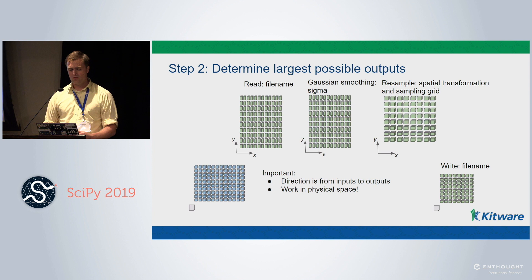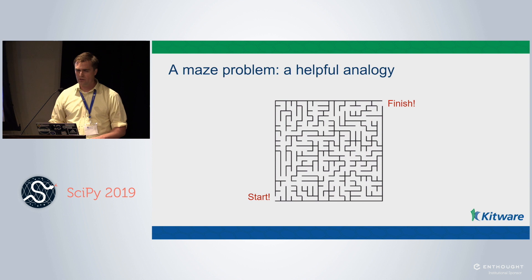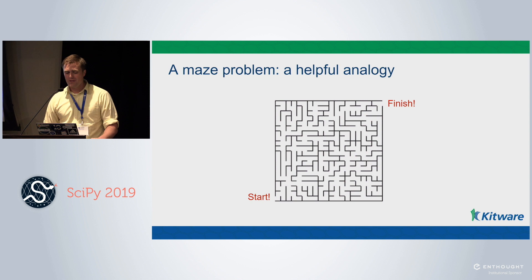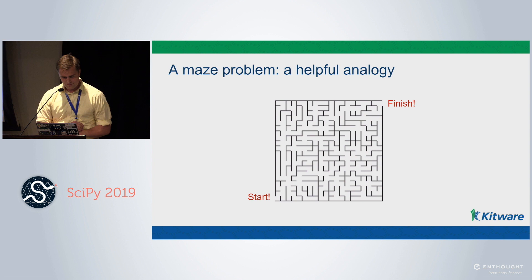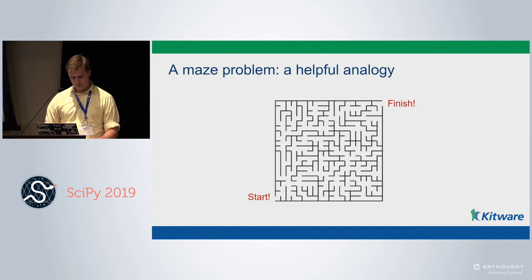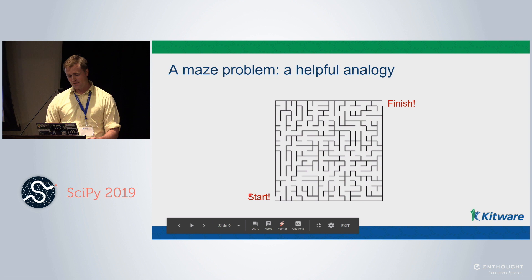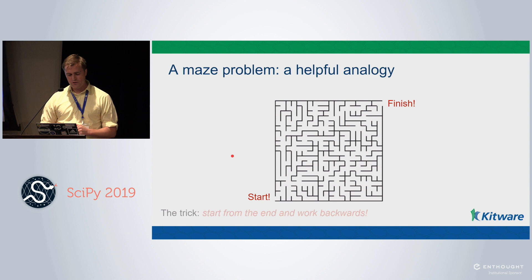Now we come to step three, which starts to get a little trickier. Here's a fun maze problem that's going to help us. You start from the beginning, go down one path — dead end — try another path — another dead end. You kind of think, I really want to get over there, so I need to keep trying to get closer to the end.